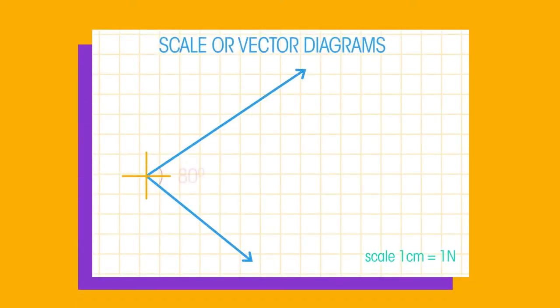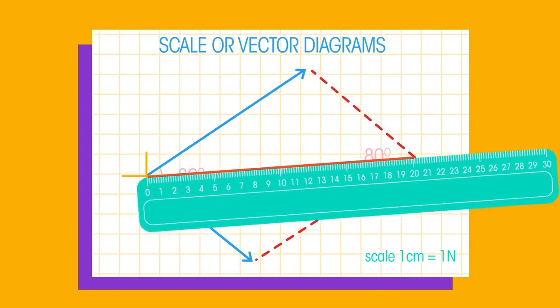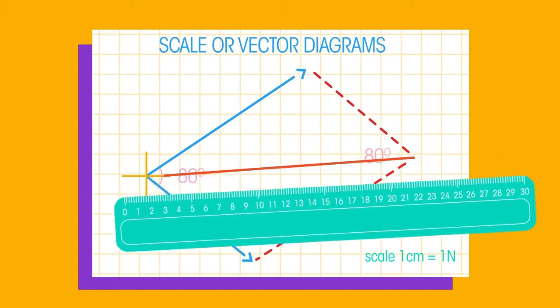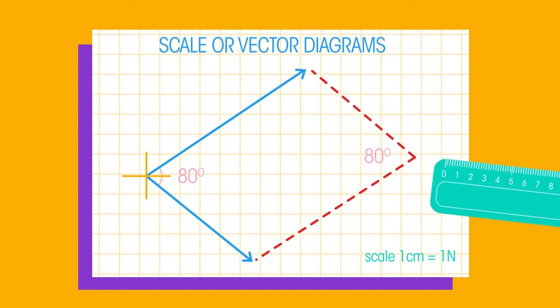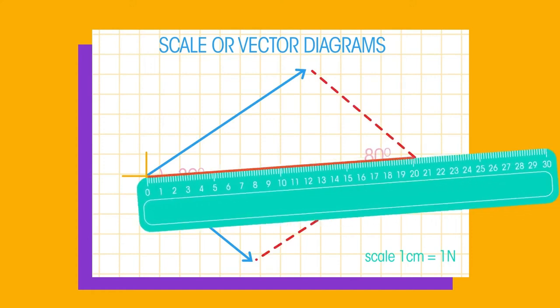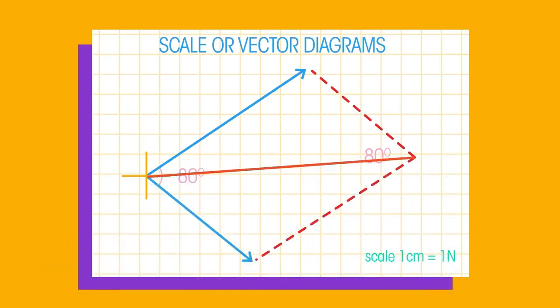Scale or vector diagrams show forces acting on an object and the angle between them. They can be used to calculate the resultant force. We draw scale diagrams using the following steps. Step 1: Draw the arrows at the correct angles to represent the forces. Step 2: Draw lines to make a parallelogram. And Step 3: Measure the diagonal of the parallelogram. This is your resultant force.